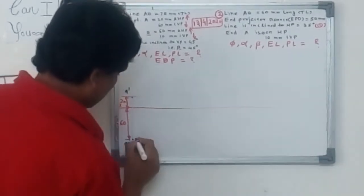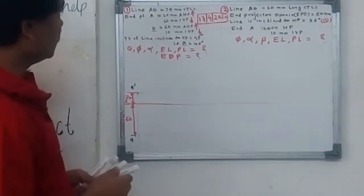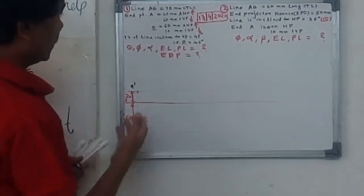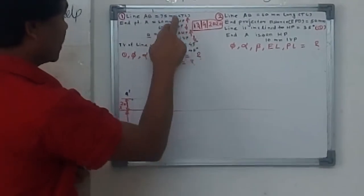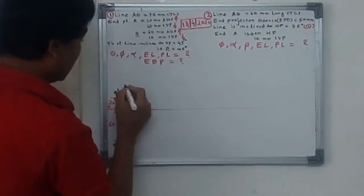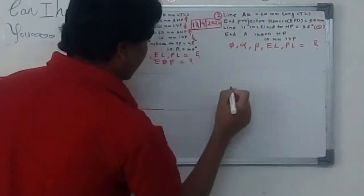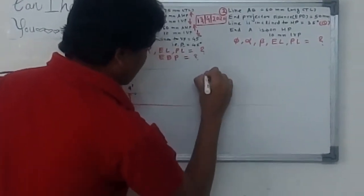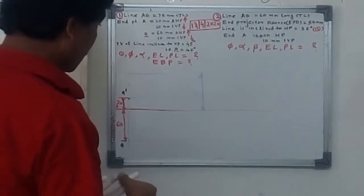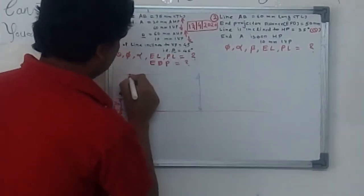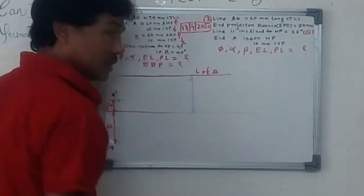Draw it horizontal. Then, for endpoint B, we take it 60 millimeters above HP — so from the XY line, we take 60 millimeters. This is nothing but the locus of B, meaning your B dash and B1 dash points will appear on this line.